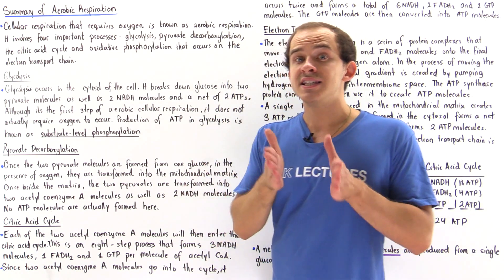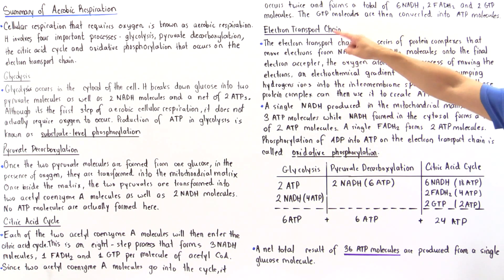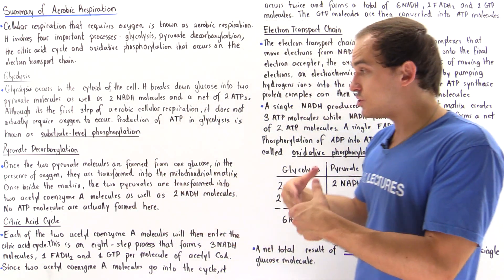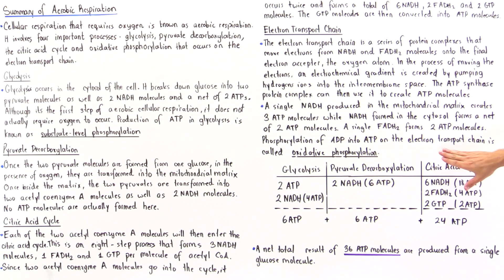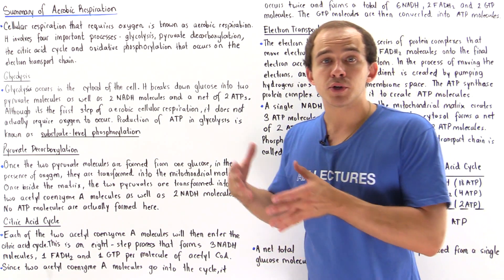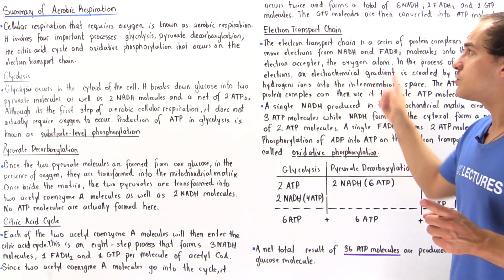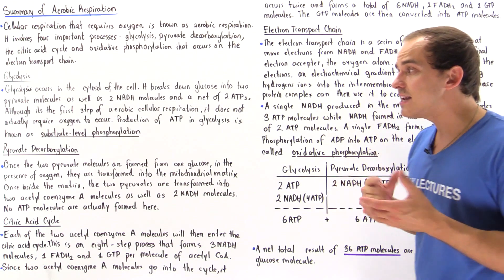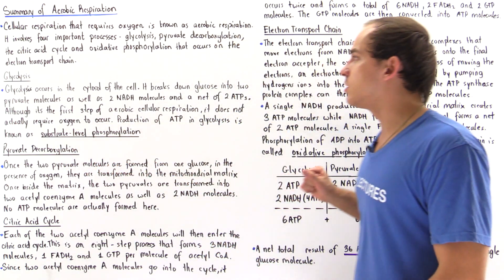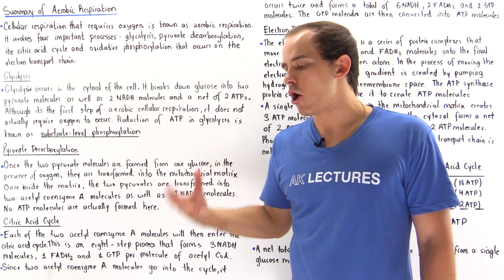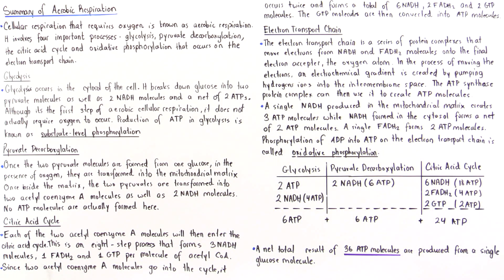A single FADH2 formed in the citric acid cycle produces two ATP molecules. The process by which ATP synthase phosphorylates ADP into ATP is known as oxidative phosphorylation. To summarize: when ATP is produced without using the electron transport chain, as in glycolysis and the citric acid cycle, that is substrate level phosphorylation. When the electron transport chain produces ATP, that is oxidative phosphorylation.